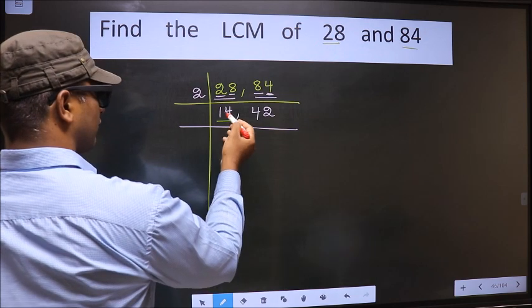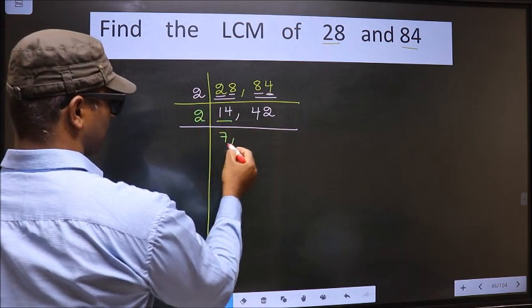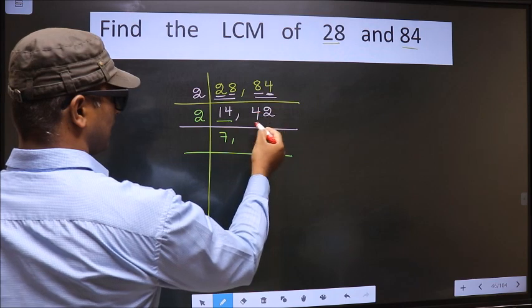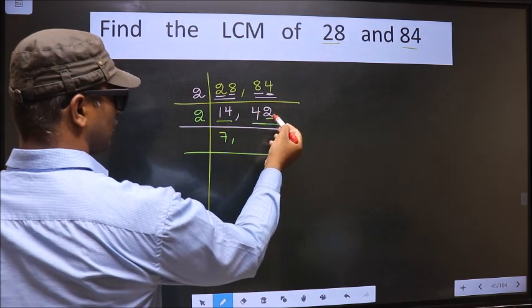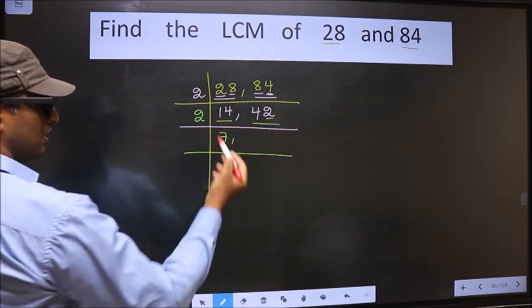Now here we have 14. 14 is 2 sevens, 14. The other number 42. Last digit 2, even. So this number is divisible by 2.